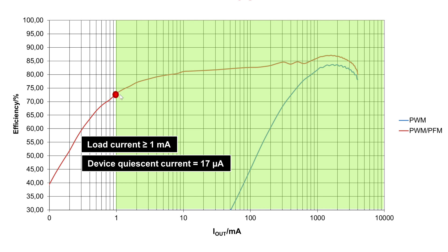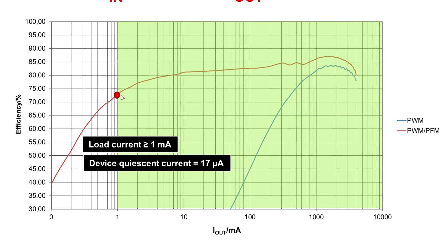Since there are applications out there that operate at even lower load currents than 1 milliamp, like metering, wearable or Internet of Things application, we need to have a device that operates at high efficiency levels, even at load currents lower than 1 milliamp.